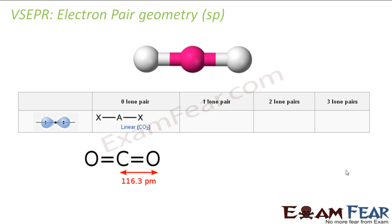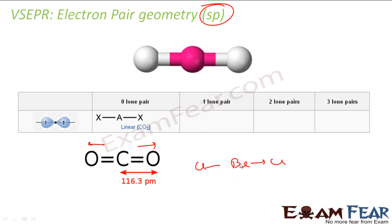So let's start with the VSEPR theory. Let's start with SP hybridization geometry first. SP is a hybridization — we will discuss hybridization later, so you can ignore this part now. Let's take the example of CO2. If you draw the Lewis structure, there is no extra lone pair on carbon. Both oxygens will repel each other and the molecule becomes straight — linear. Similarly, for BeCl2, beryllium does not have any extra valence electrons. They repel each other and become straight. There is zero lone pair, and the shape is linear.